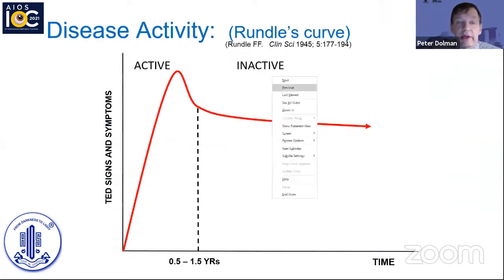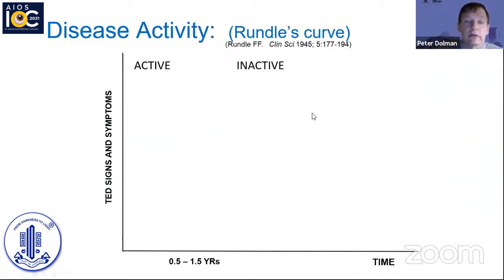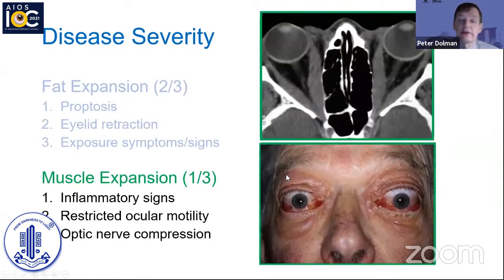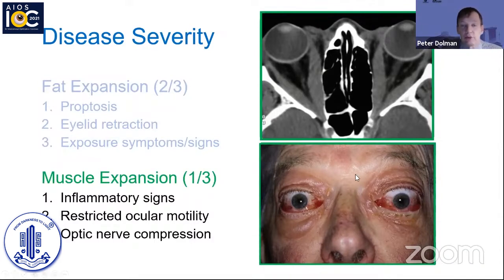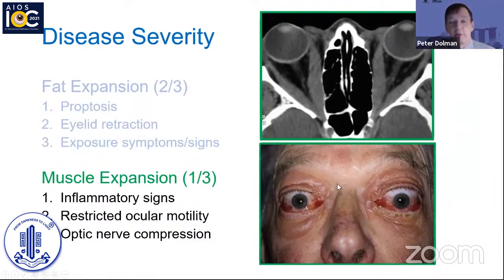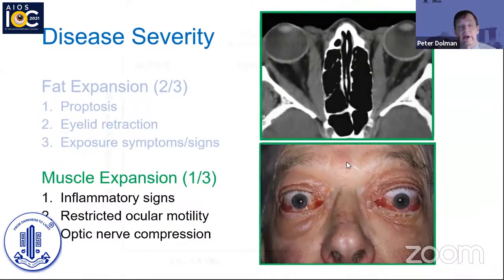In cases where the swollen muscles compress the nerve at the tight orbital apex, vision loss from optic nerve compression may occur. This latter group typically consists of older patients with a more equal gender distribution — the fat expansion group is primarily female to male at a five-to-one ratio. The muscle expansion group has a very rapid onset, easily documented by the patient and clinician, and is more associated with smoking and a family history.